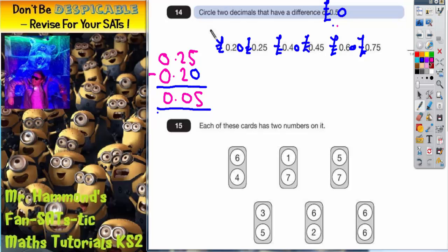Now at this point you'll probably be able to see it. It's going to be that one and that one. So 25 pence and 75 pence. Quick double check. Do they give a gap of 0.5?